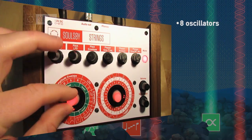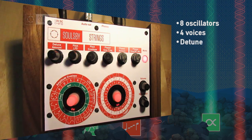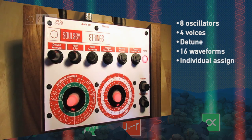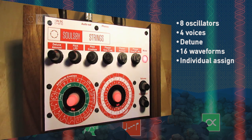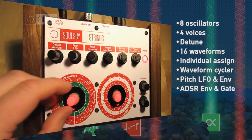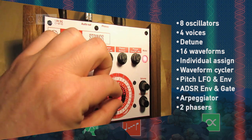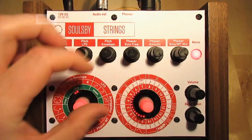It features two oscillators per voice which can be detuned, 16 waveforms which can be individually assigned to each voice, a waveform cycler, pitch LFO envelope, ADSR envelope and gate mode, arpeggiator, two phasers, monophonic mode and more.